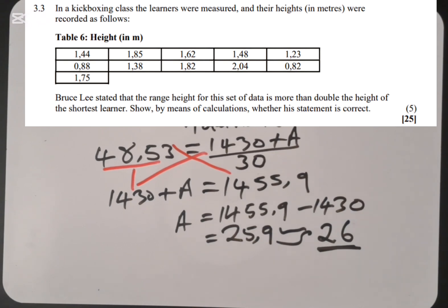Moving to 3.3. It says that in a kickboxing class, the learners were measured and their height in meters were recorded as follows. Table 6, height in meters: 1.44, 0.88, 1.75, 1.85, 1.38, 1.62, 1.82, 1.48, 2.04, 1.28 and 0.82. Bruce Lee stated that the range height for this set of data is more than double the height of the shortest learner. Show by means of calculating whether this statement is correct or not.